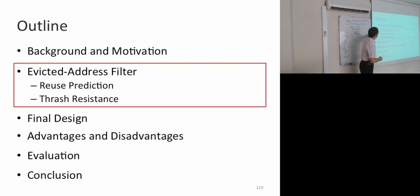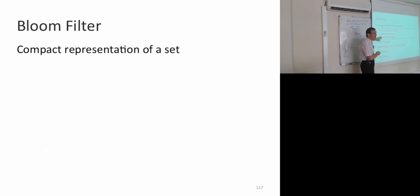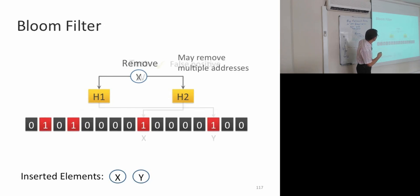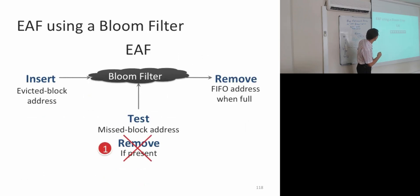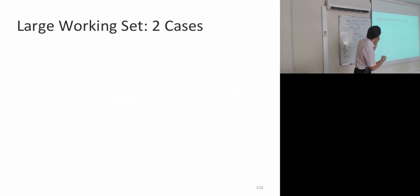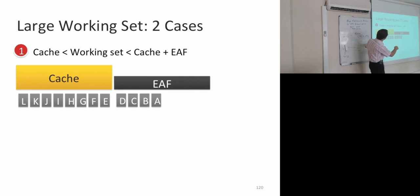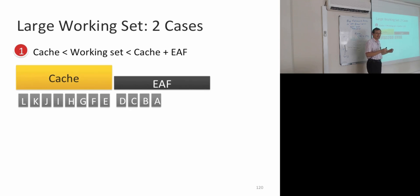Now that I've given you the design of the evicted address filter, let's look at thrash resistance. I've given you the reuse prediction, but we didn't really talk about thrash resistance. The design choices made with the Bloom filter lead to a nice thrash-resistant mechanism. Thrashing happens when you have a large working set. There are two cases: one is where the working set is greater than the cache but less than cache plus evicted address filter together, since we clear the EAF when it becomes full.